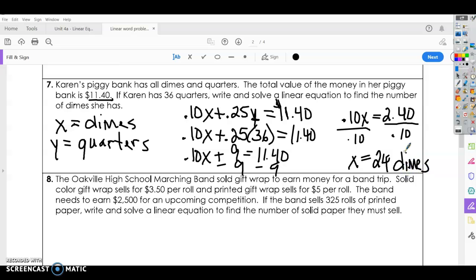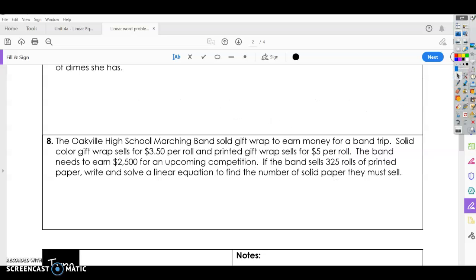Alright, these are easy to check as well. So just do 24 dimes times 10 cents plus 25 cents times 36 quarters and see if that equals $11.40. Alright, here's the last example on standard form. So the Oakville High School Marching Band sold gift wrap to earn money for a band trip. Solid color gift wrap sells for $3.50 per roll and printed gift wrap sells for $5 per roll. The band needs to earn $2,500 for an upcoming competition. If the band sells 325 rolls of printed paper, write and solve a linear equation to find the number of solid paper they must sell.